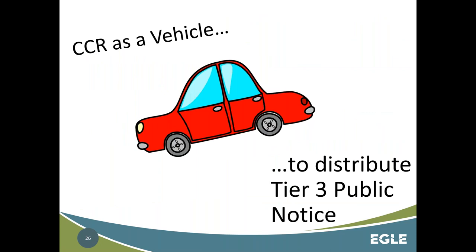If you're including a public notice alongside your CCR, think of the CCR as a vehicle to distribute the public notice — not as embedding the public notice within the CCR; they are two separate things. Using the CCR to send out a public notice is perfectly fine as long as it meets the public notice deadline. However, remember that you still have to explain the violation within the CCR itself — attaching a public notice does not eliminate the requirement to describe what happened.